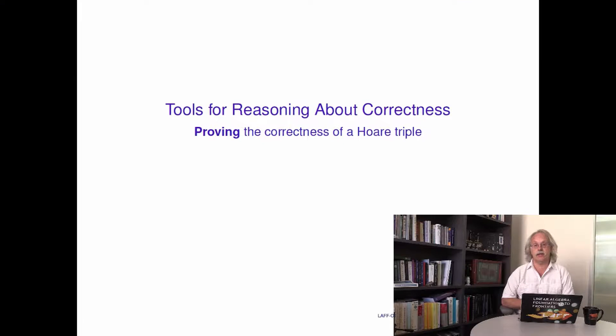This section is about tools for reasoning about correctness. What we've seen so far is the notion of a Hoare triple, which is true if an annotated code segment is correct, and the notion of a weakest precondition, which tells you for what inputs described by predicate Q the command will leave you in a state described by the postcondition R. In this unit we're going to put all of that together and show you how the weakest precondition together with the Hoare triple allow you to prove that an annotated code segment is in fact correct.